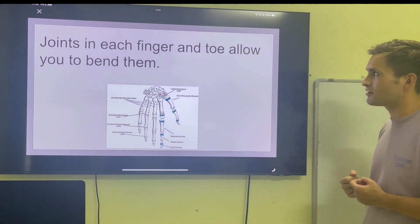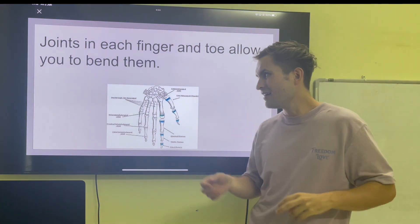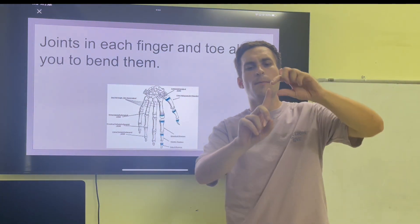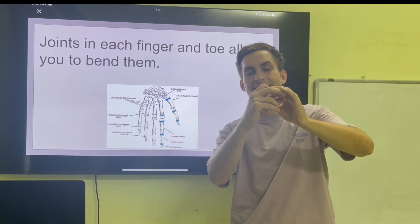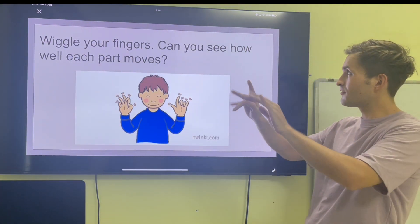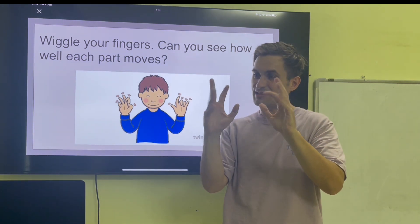Joints in each finger and toe allow you to bend them. You can bend your fingers at the joints. My finger has one, two, three joints. Wiggle your fingers. Can you see how well each part of my fingers is moving?